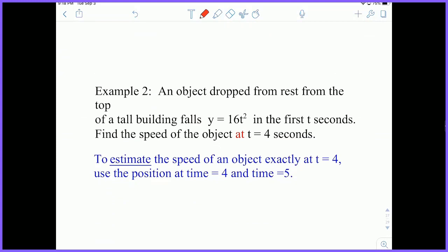Let's talk about instantaneous rate of change. In instantaneous rate of change, we're referring to the speed of an object exactly at one moment in time. In this example, we're going to take a look at the object speed exactly at t equals 4.